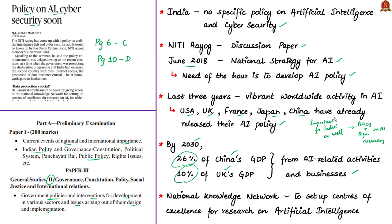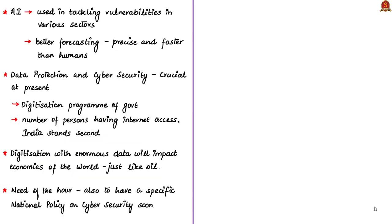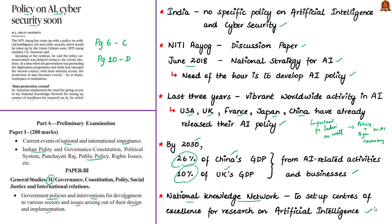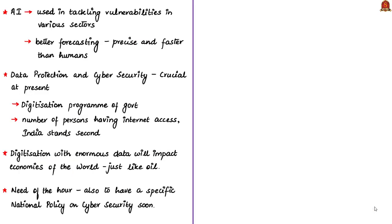There is a need for a National Knowledge Network to set up centers of excellence for research on artificial intelligence. The National Knowledge Network's role is to connect all knowledge and research institutions in the country using a high-bandwidth, low-latency network — meaning a computer network optimized to process a very high volume of data with minimal delay. Artificial intelligence has wide applications: it is used to tackle vulnerabilities in various sectors, for better forecasting in retail and weather, and AI systems are found to be more precise and faster than human beings.